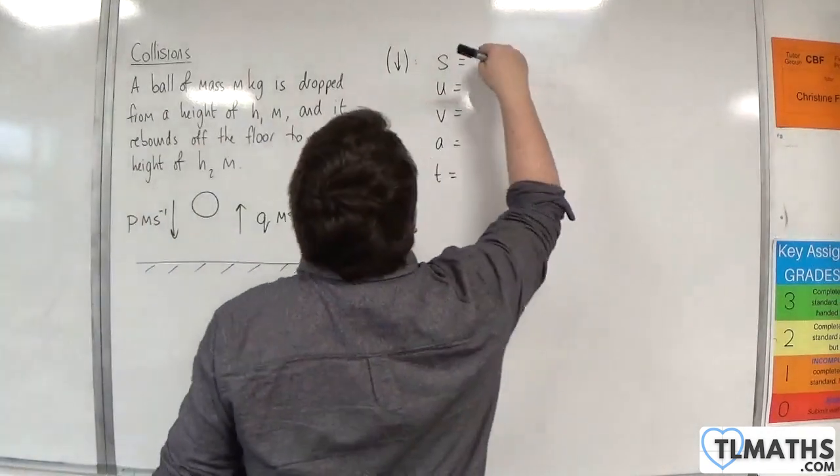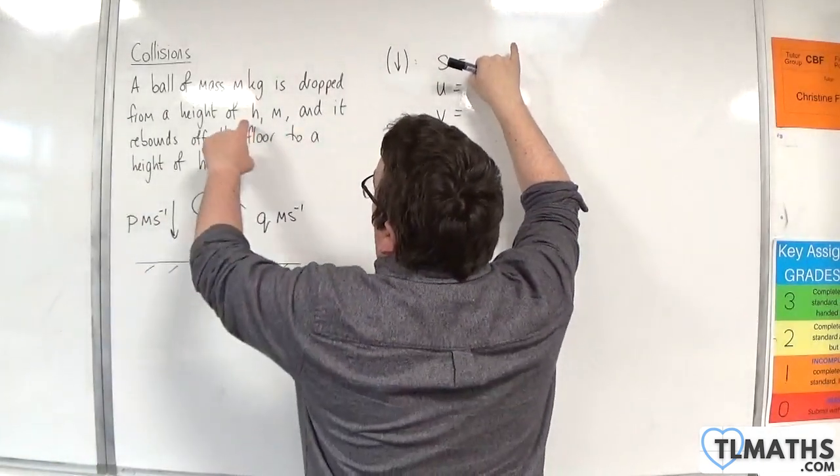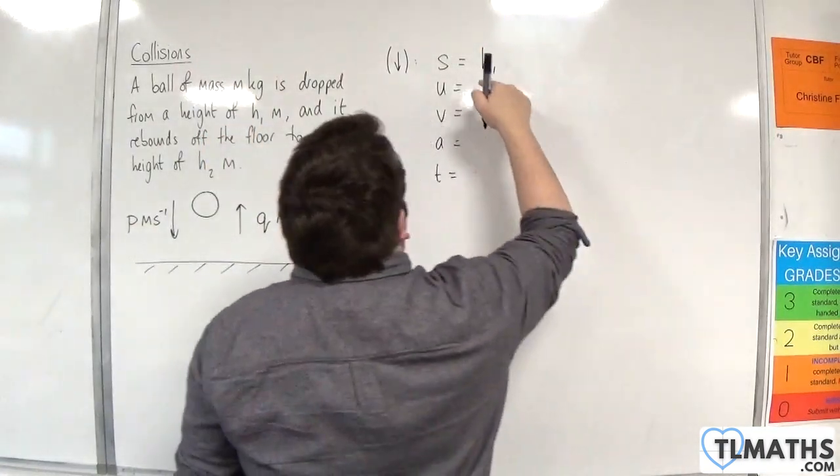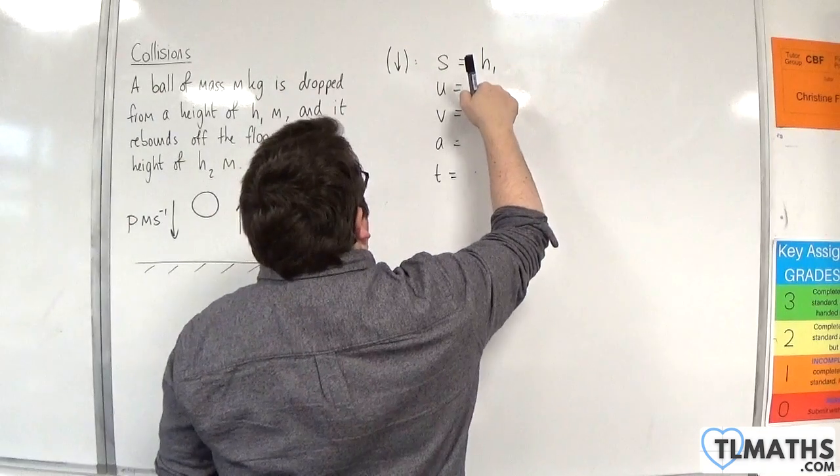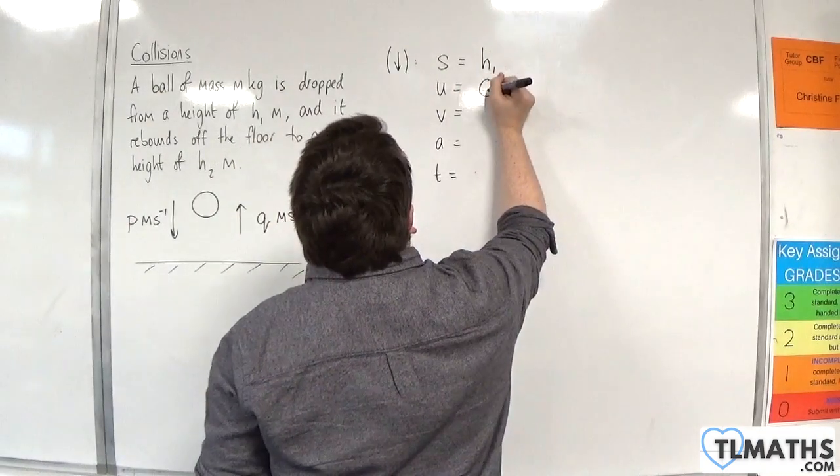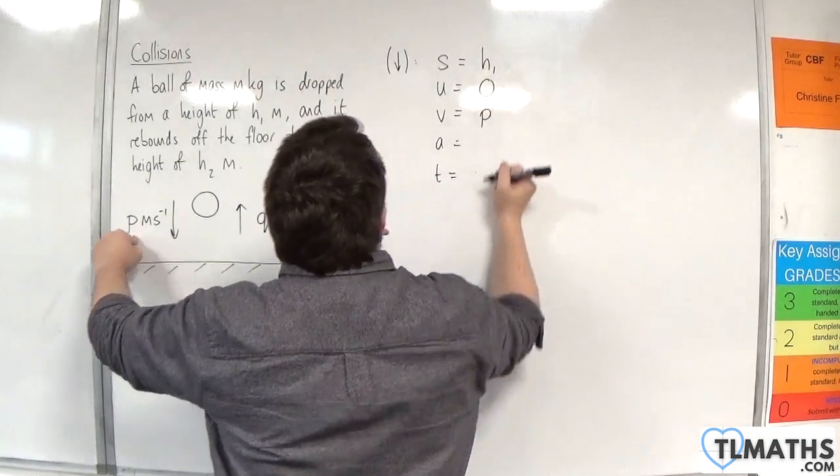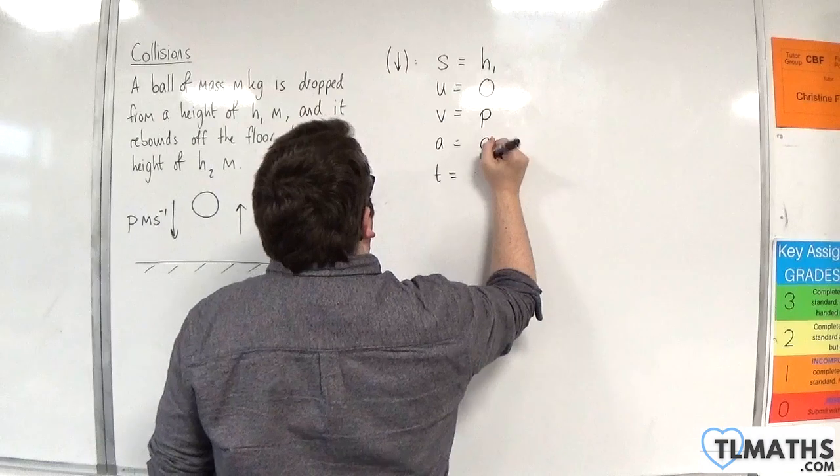So the displacement will be h1. Because it goes from a height of h1 to the ground. The initial velocity being dropped from rest will be zero. V, the final velocity, is what I want to find. So that's p. And the acceleration will be g.